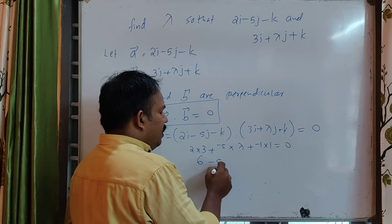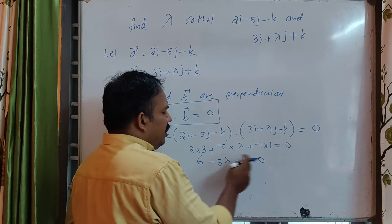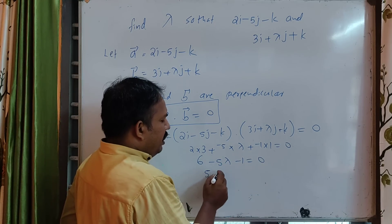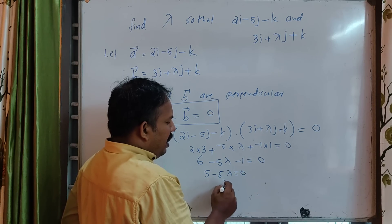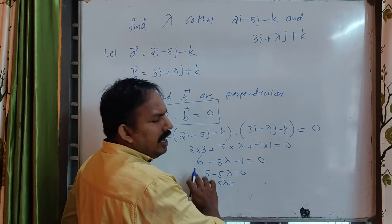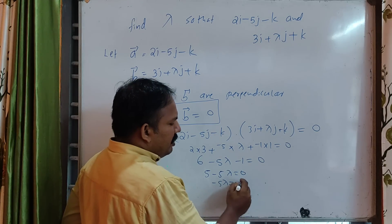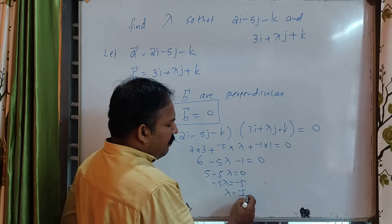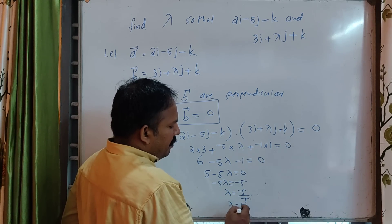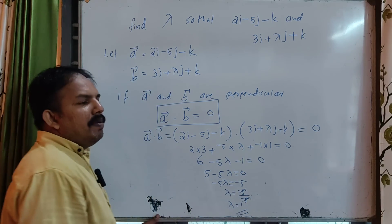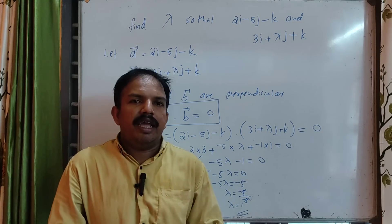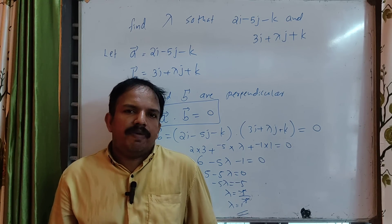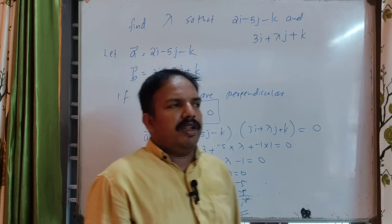A dot b equals 0: 2 into 3 plus minus 5 into lambda plus minus 1 into 1 equals 0. So 6 minus 5 lambda minus 1 equals 0, which gives 5 minus 5 lambda equals 0, and therefore lambda equals 1.